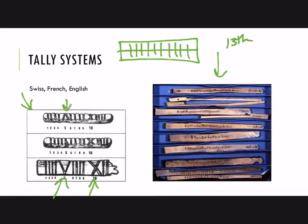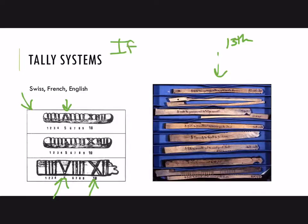A similar idea was used in French bakeries, where people would buy loaves of bread and settle their accounts weekly or monthly. Notches were made on sticks to mark how many loaves were purchased, and both the baker and the customer kept one half. If you're interested in this topic, a good resource is the Universal History of Numbers by Georges Ifrah, who traveled around the world for about ten years to research and write the book. It gives a good history of numeration systems, though it is written from an evolutionary perspective.